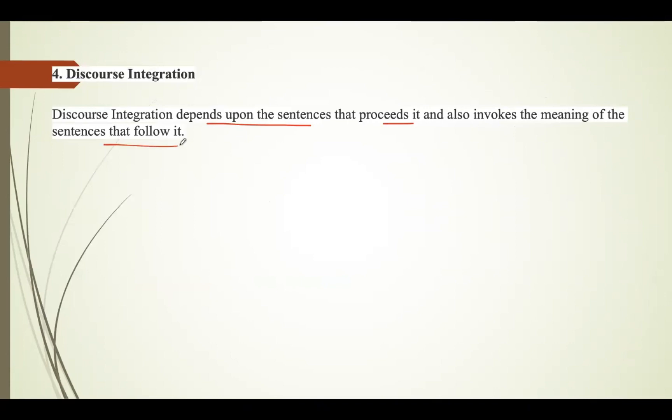Fourth is discourse integration. Discourse integration always depends upon the sentences that precede it and tries to invoke the meaning of the sentence that follows it. The meaning of any sentence is determined by the meaning of the immediately preceding sentence. It helps establish meaning based on sentences that come before it, so the preceding sentence plays a key role in discourse integration.